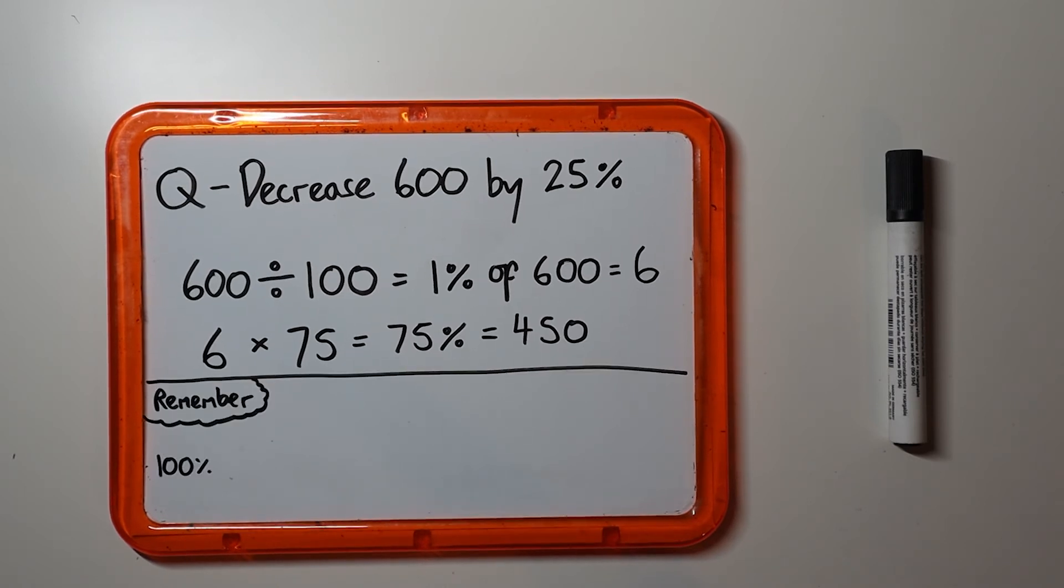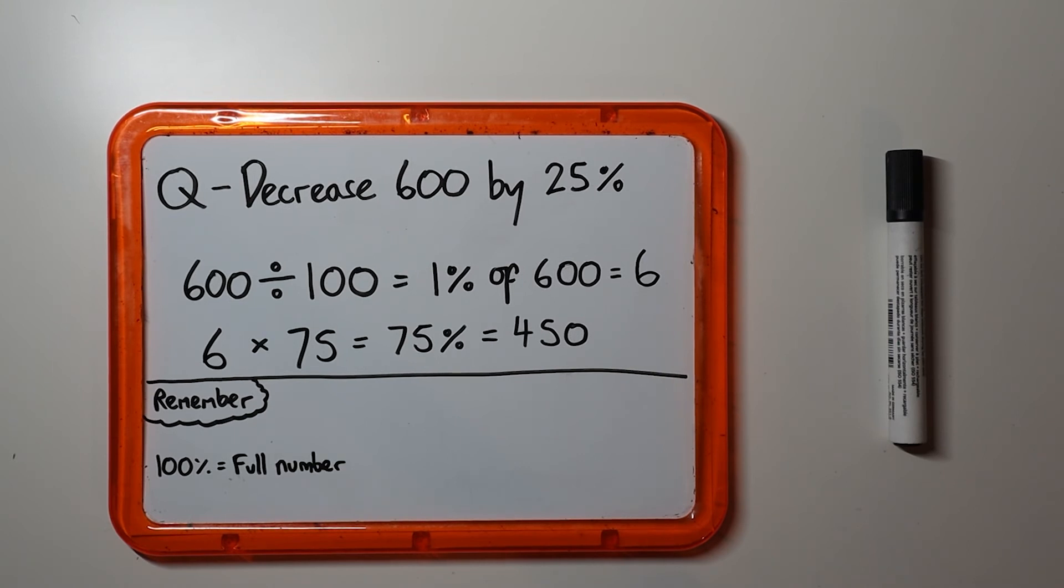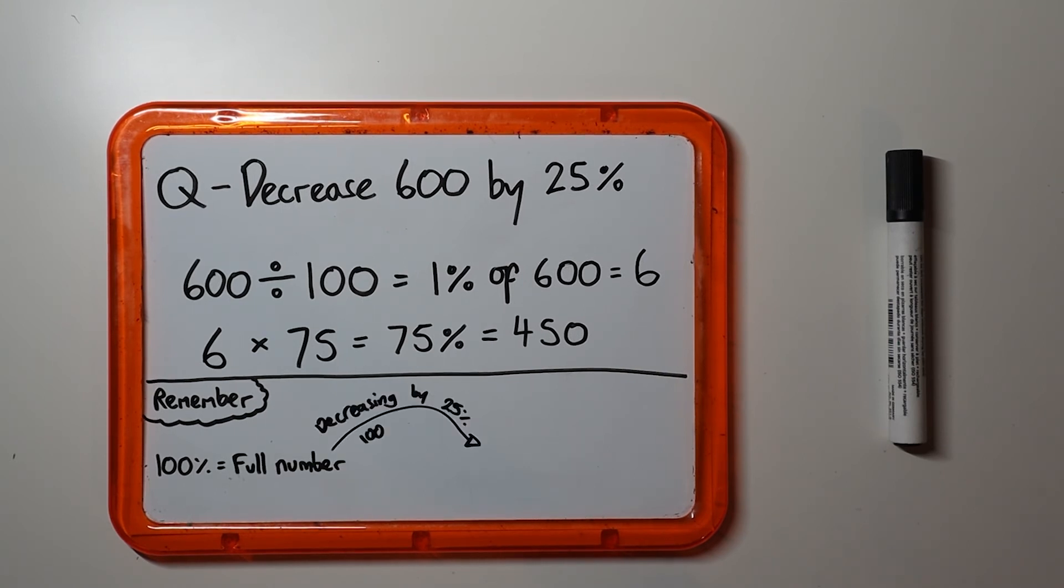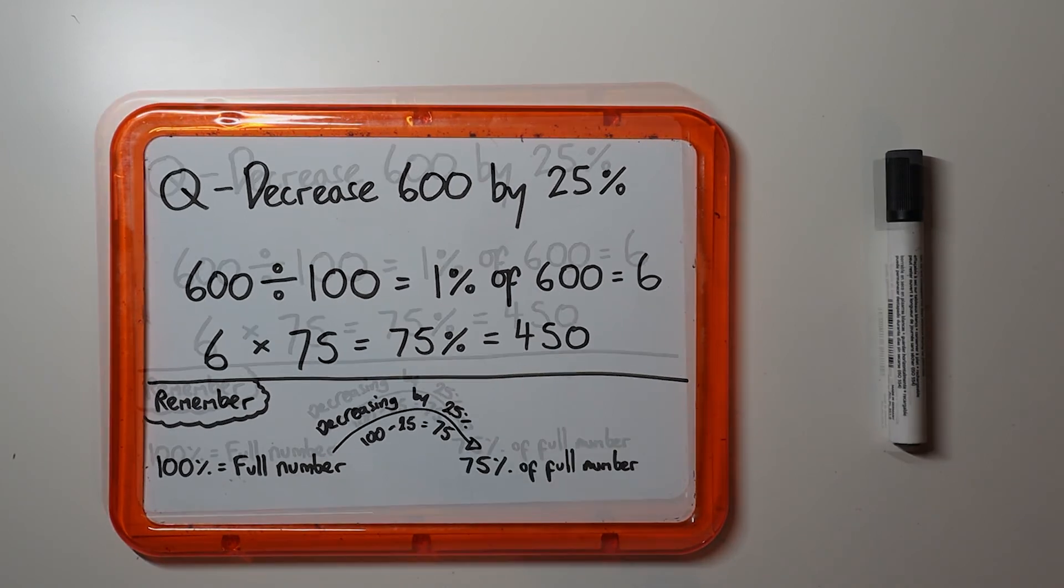Because remember, 100% is the full number, so decreasing by 25% gives 100 minus 25 which is 75% of the full number.